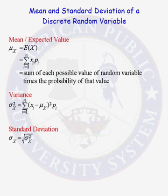How do we calculate the mean and the standard deviation of a discrete random variable? Here we're talking about where we don't have a special formula for the mean or standard deviation, like we do for special discrete random variables like the binomial, geometric, or Poisson distribution.